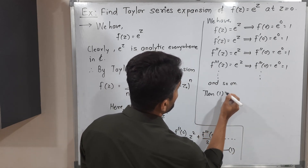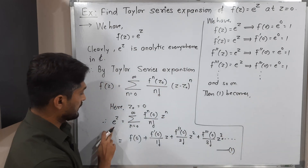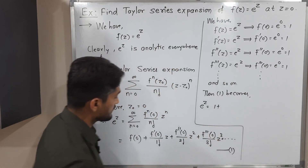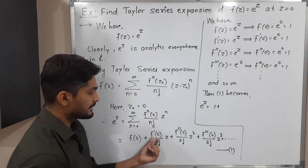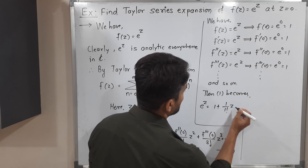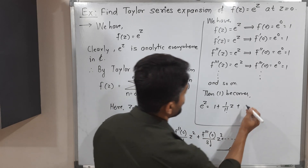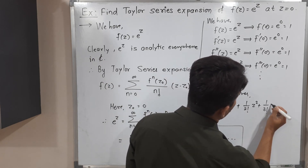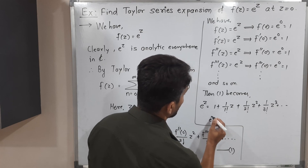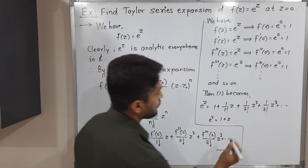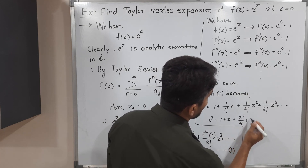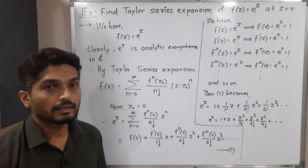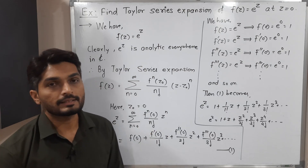Now putting all those values into equation (1): the left-hand side is e^z. f(0) = 1, plus f'(0) = 1, so we write 1 divided by 1 factorial times z, plus f''(0) = 1, so 1 divided by 2 factorial times z², plus 1 divided by 3 factorial times z³, and so on. The same series can be written as: e^z = 1 + z + z²/2! + z³/3! + z⁴/4! + ⋯. This is the required Taylor series expansion of e^z at z = 0.